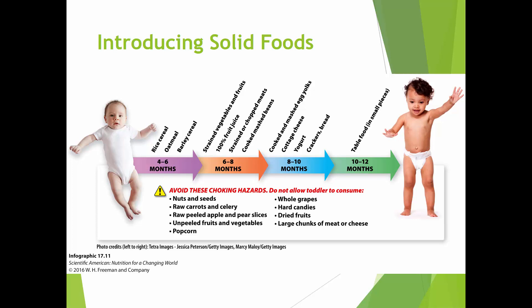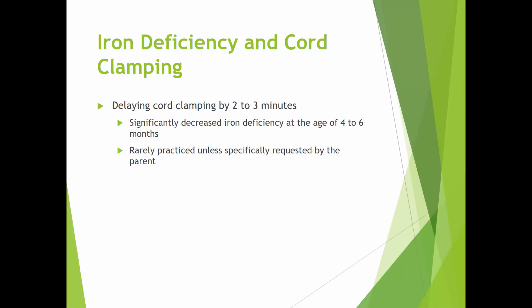Choking hazards to avoid with toddlers include nuts and seeds (not peanut butter, but whole nuts themselves), raw carrots, apple and pear slices, raw hard fruits and vegetables, popcorn, whole grapes — which can lodge in the throat — hard candies, dried fruits, large chunks of meat or cheese, and hot dogs. Foods like grapes and hot dogs need to be cut up; it may sound strange to cut up grapes but it's necessary to prevent choking.